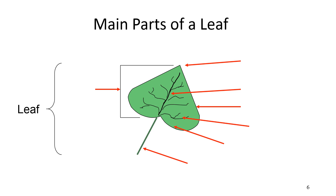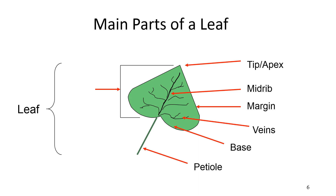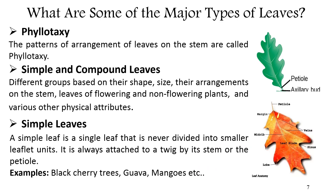Let's revise the different parts of the leaf: tip or apex, margin, midrib, veins, base, petiole, and blade or lamina. Before explaining the major types of leaves, let's learn about phyllotaxy. Phyllotaxy is the pattern of arrangement of leaves on the stem. Plants show three types of phyllotaxy: alternate, opposite, and whorled.